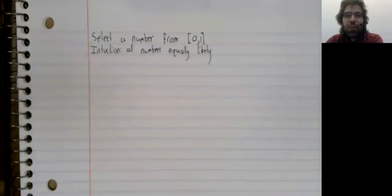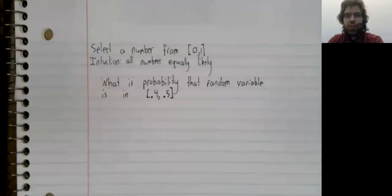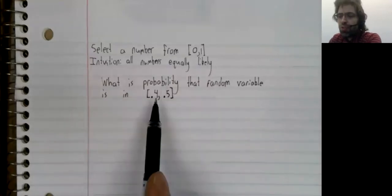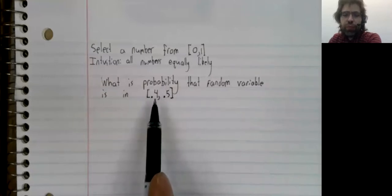Every outcome has a probability of zero, but let's try to use it as a guideline. Instead of asking what the probability is that we select a specific number, let's ask the following question: What is the probability that the random variable falls into this little interval?